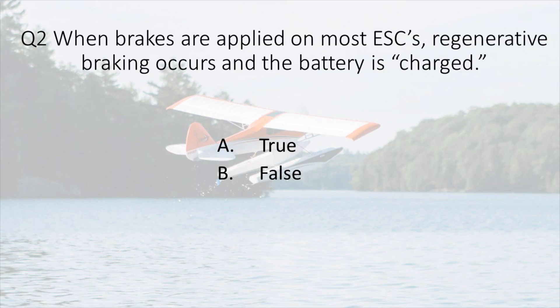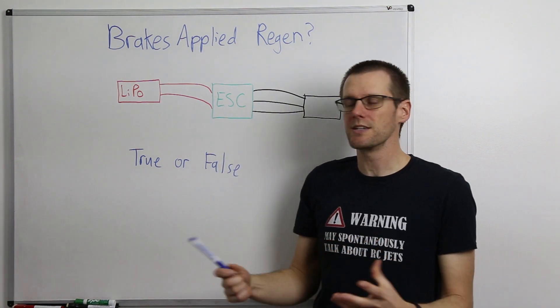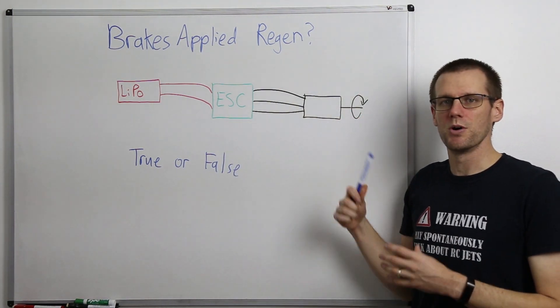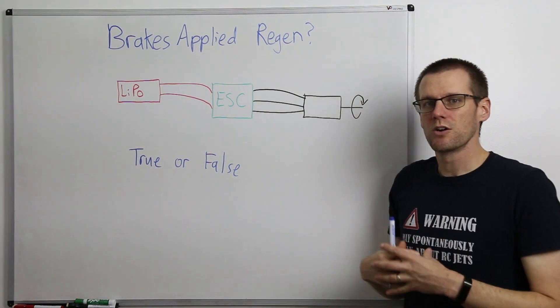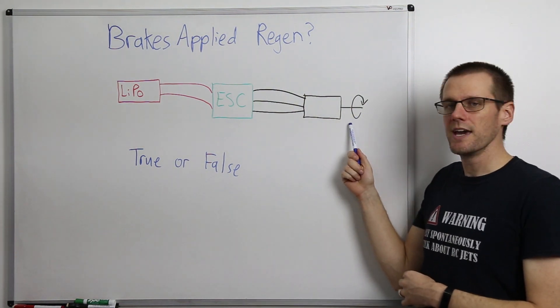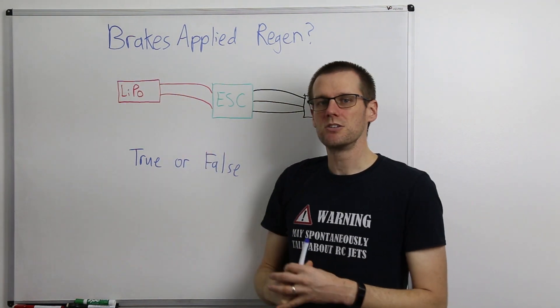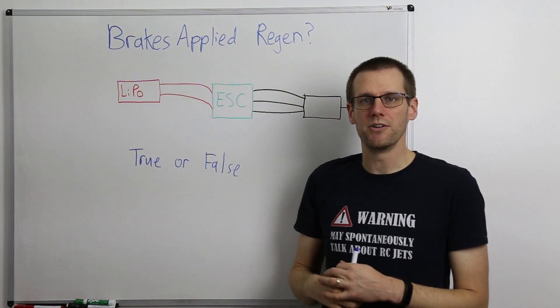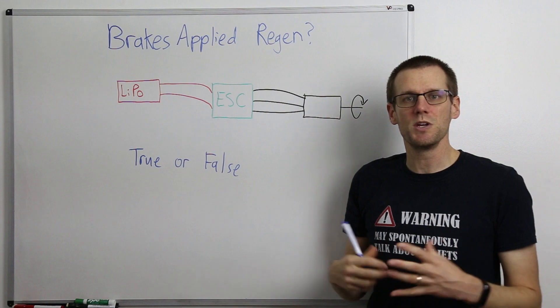Question number two: on most ESCs that are used in the hobby, as you apply the brakes, regenerative braking occurs. True or false? Essentially what happens is we use our battery to power our electronic speed control, which gets us some sort of mechanical motion from a motor. Imagine this is in a radio control car. As we apply the brakes, the question is essentially asking, can we convert that mechanical energy through the motor, through the speed control, and back into our lithium polymer battery?